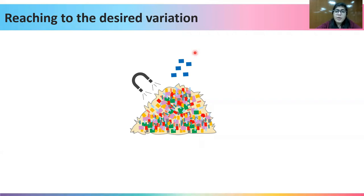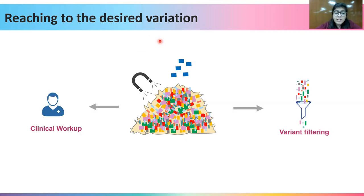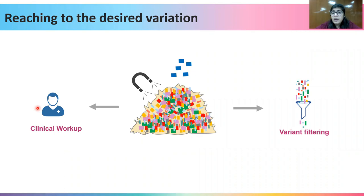The question still remains: how do we reach the desired variation? There are two components — clinical workup and variant filtering. It has been observed that the more detailed the clinical workup is, the better the chances of arriving at a variation that could explain the phenotype. For example, a clinician might report that a patient is suffering from an inherited cardiac disorder, and a geneticist would know that more than 300 genes can be associated with inherited cardiac disorder, meaning there are a large number of genes to screen.